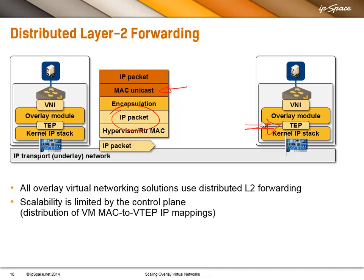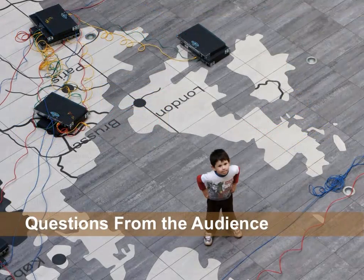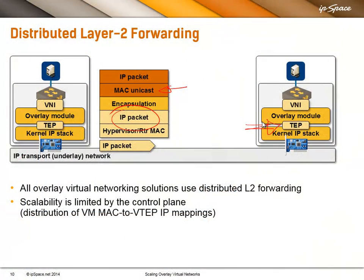I haven't seen any implementation of overlay virtual networking that doesn't have distributed layer 2 forwarding. The question is how the control plane is implemented — how do we distribute MAC-to-VTEP IP mappings between hypervisors? Some solutions use multicast, most use some control plane, and the question is how scalable that control plane is. As for applications requiring MAC connectivity between different server tiers, I'm not aware of any, but within a single tier, people still use Microsoft Network Load Balancing, which uses MAC-layer tricks. So yes, sometimes we still have to support layer 2 connectivity.